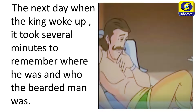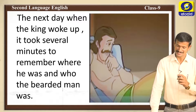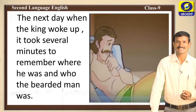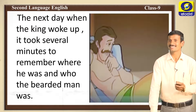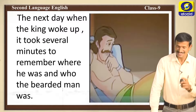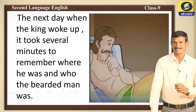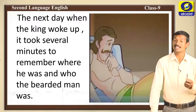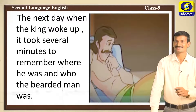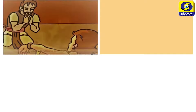The king usually slept in the palace, but now he was in the hut, so he couldn't realize everything at once. After some time he realized where he was and who the bearded man was. Now what would happen next?